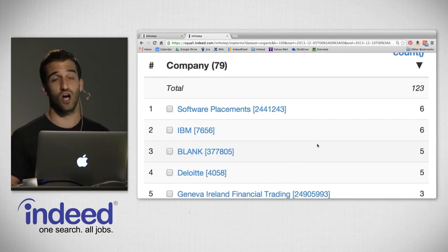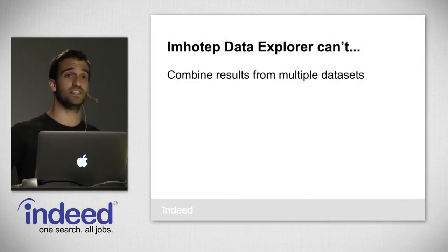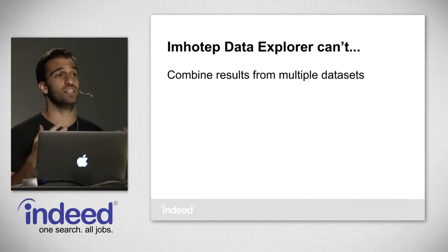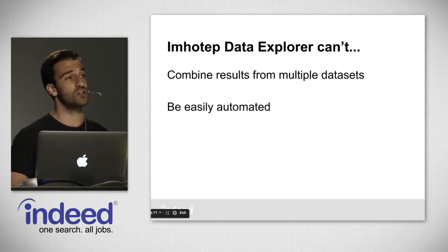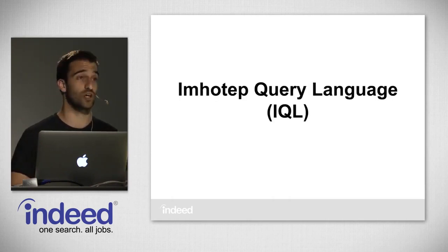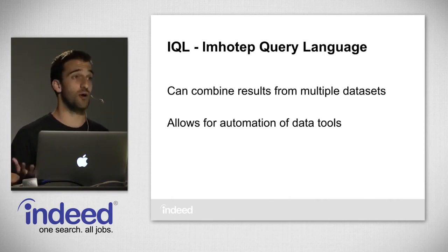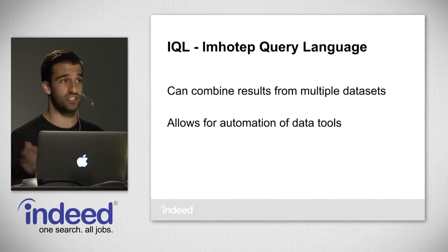Imhotep Data Explorer is a super powerful tool, which is why we're super excited to open-source it. But there were some things we weren't able to do with it. For instance, it can't combine results from multiple datasets — we used the Crunchbase data and the organic impressions data, but if we wanted to join them to see companies receiving the most clicks who raised a particular amount of money, we couldn't do that. It also doesn't allow easy automation, and it doesn't really give us hooks into the data itself.